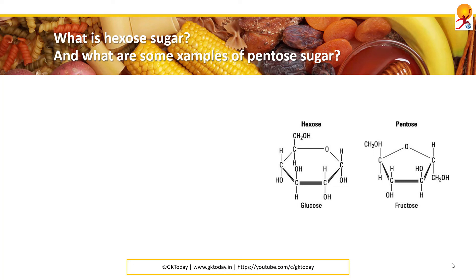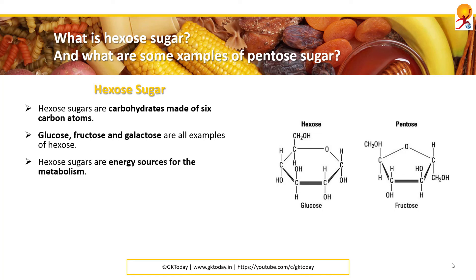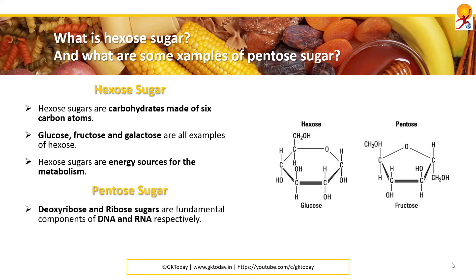What is hexose sugar and what are some examples of pentose sugar? Hexose sugars are carbohydrates made of six carbon atoms — hex means six. Glucose, fructose, and galactose are examples of hexose sugars and these are energy sources for metabolism. Pentose sugars include deoxyribose and ribose, which are fundamental components of DNA and RNA. Both of these are pentose sugars.